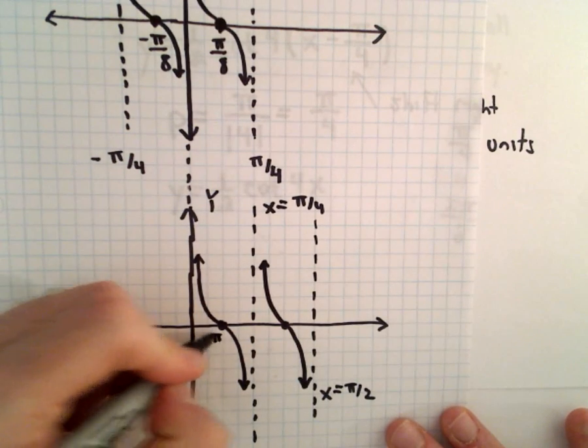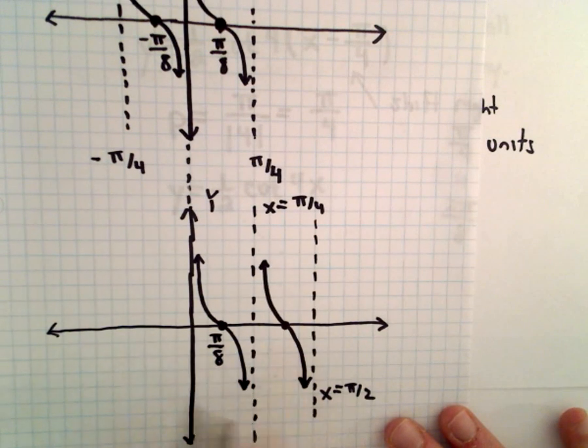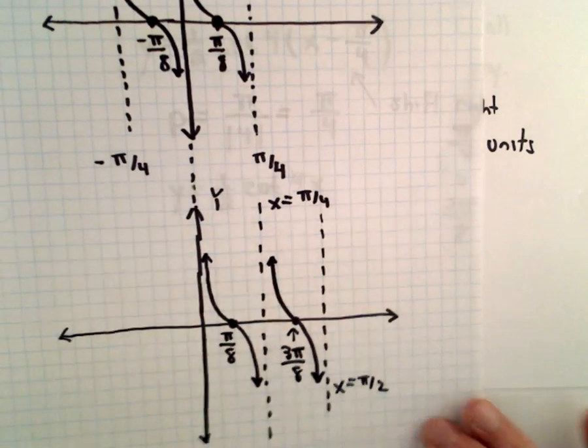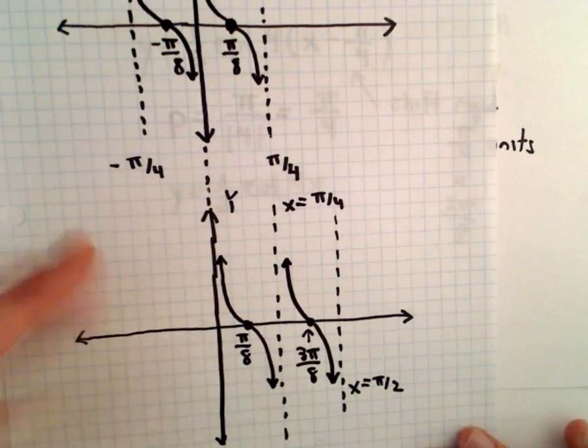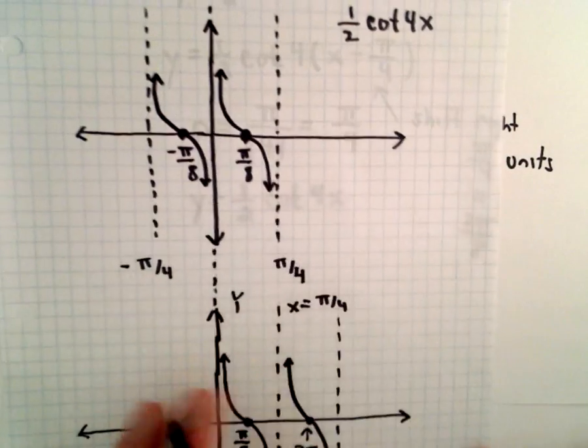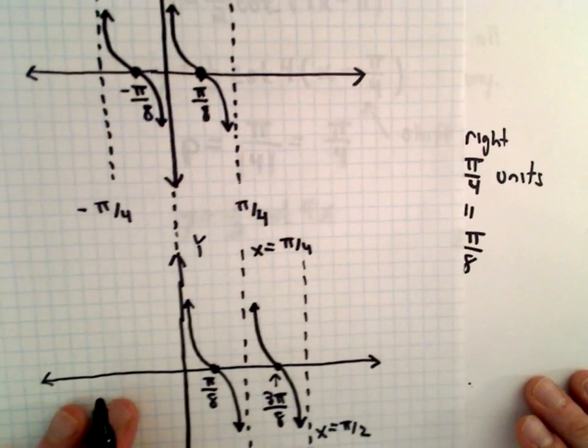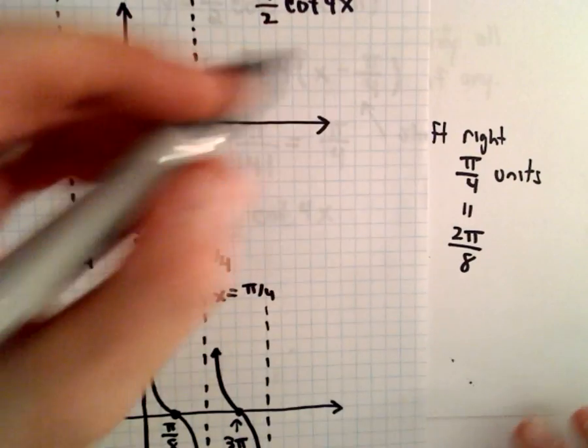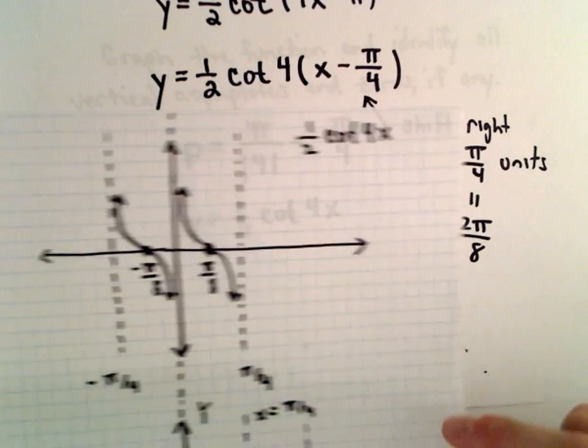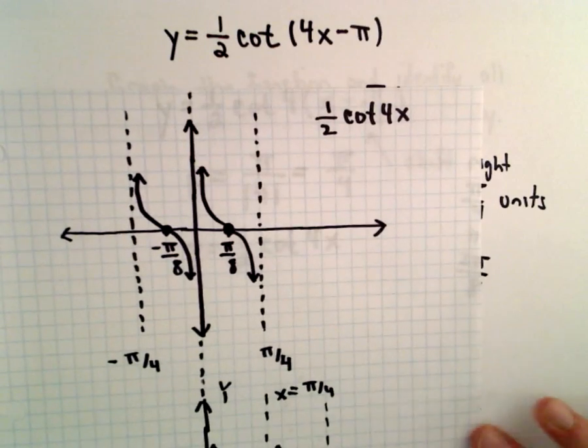So that's still the point pi over 8. And if we add pi over 4, or 2 pi over 8, that'll now be the x-coordinate of 3 pi over 8. But again, the graph, if you had more pieces drawn, if you had the entire cotangent graph all labeled in our first graph, you would be getting the exact same graph. So this function is the exact same thing. It'll produce the exact same graph as 1 half cotangent of 4x minus pi.